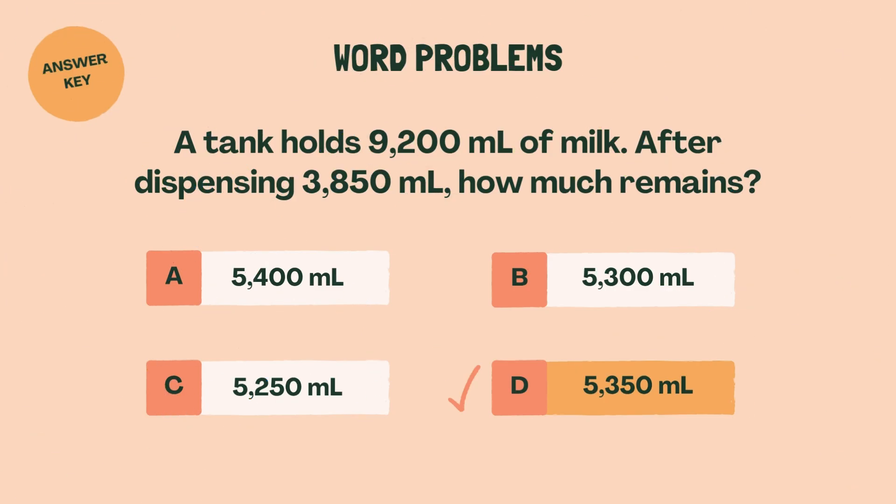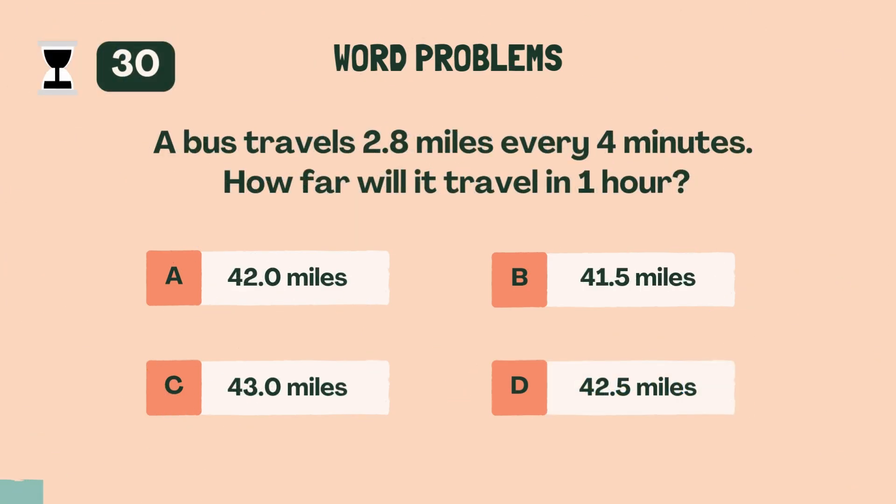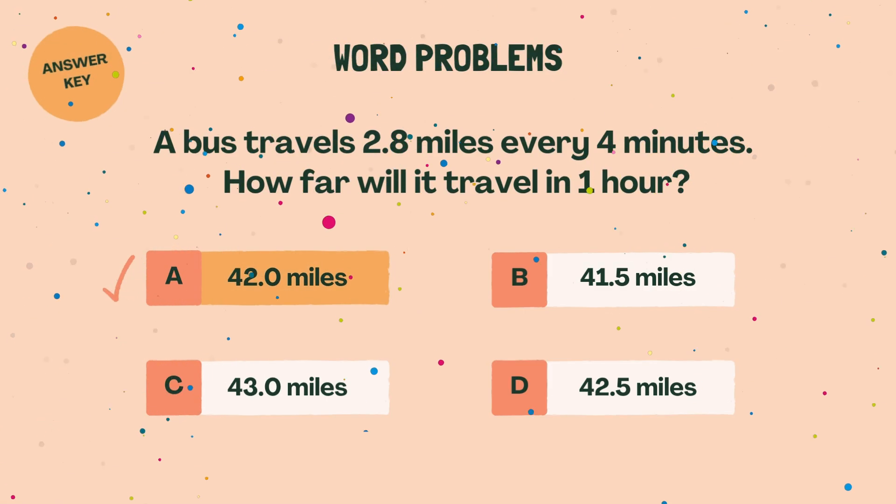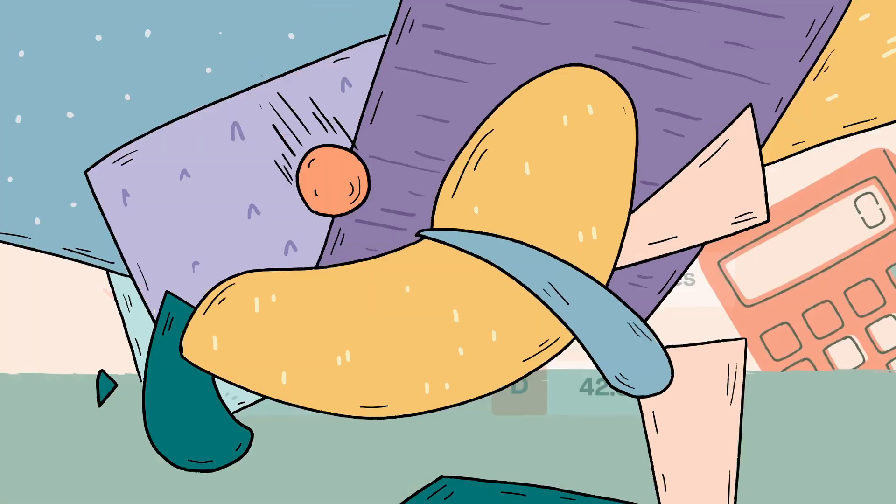A bus travels 2.8 miles every four minutes. How far will it travel in one hour? A, 42.0 miles.